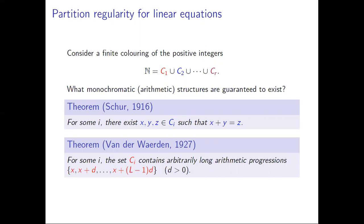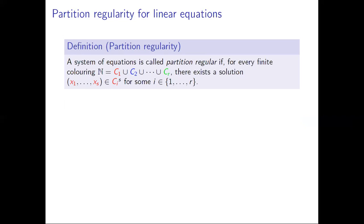Van der Waerden's theorem tells us that there are arbitrarily long monochromatic arithmetic progressions. In other words, no matter how we color the positive integers with finitely many colors, for every positive integer l there exist x and d such that x, x+d, all the way up to x+(l-1)d are all the same color. More generally, we refer to a system of equations as being partition regular if whenever we finitely color the positive integers there exists a monochromatic solution. Schur's theorem tells us x+y=z is partition regular, and Van der Waerden's theorem tells us that the system underlying arithmetic progressions is partition regular.